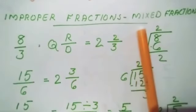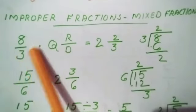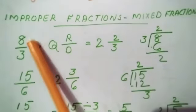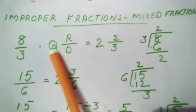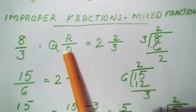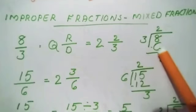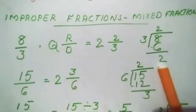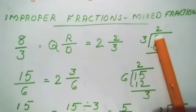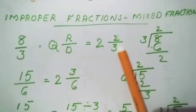Now, changing an improper fraction into a mixed fraction. Example: 8/3. We divide 8 by 3. The quotient becomes the whole number, the remainder becomes the new numerator, and the divisor remains the denominator. 3 goes into 8 twice (3 × 2 = 6), remainder is 8 − 6 = 2. So the quotient is 2, remainder is 2, divisor is 3 — giving the mixed fraction 2 and 2/3.